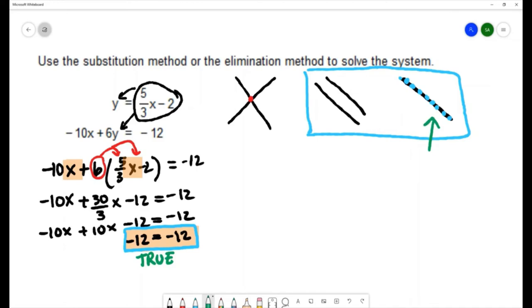If you ended up with a false statement a false statement would indicate that your two lines are parallel and never intersect each other.